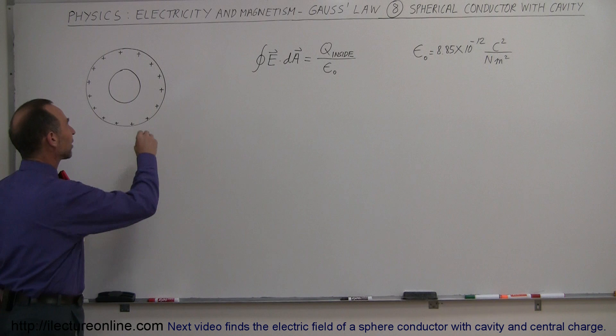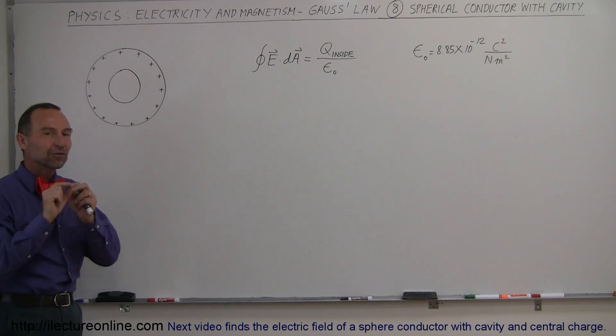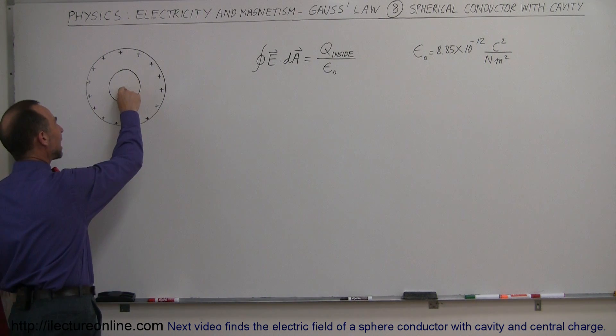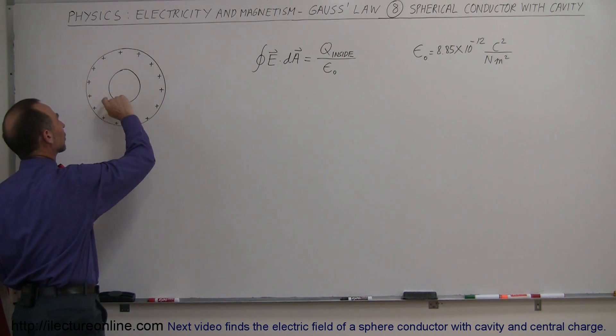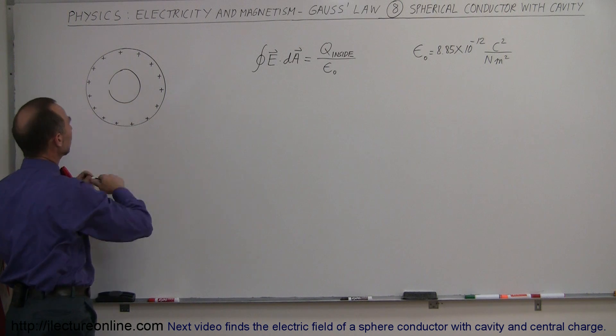A different situation where we actually have another charge inside the cavity. If there's no charge inside the cavity, all of the charge of the conductor will reside near the edge of the conductor, and no charge will reside on the inside of the conductor.